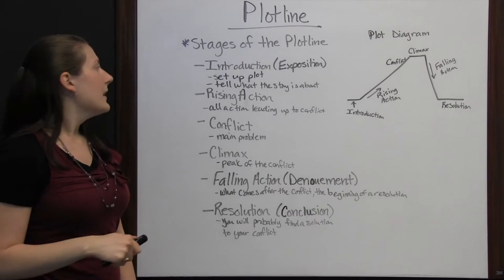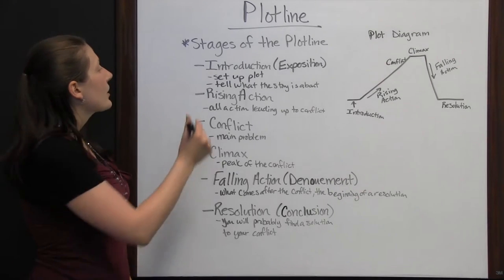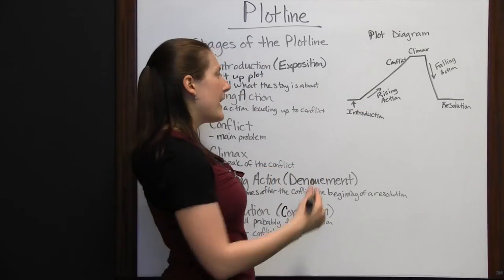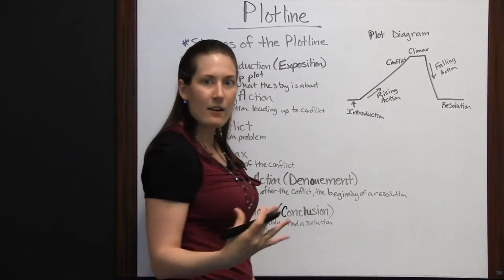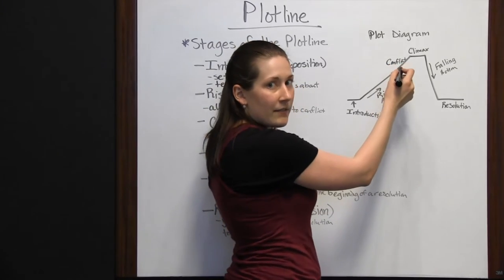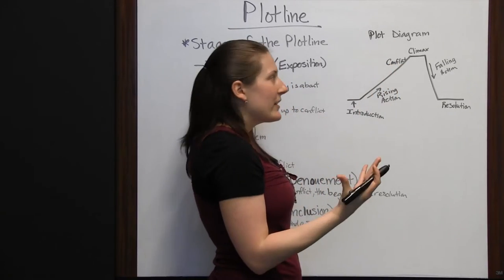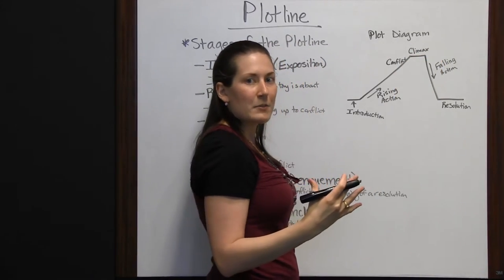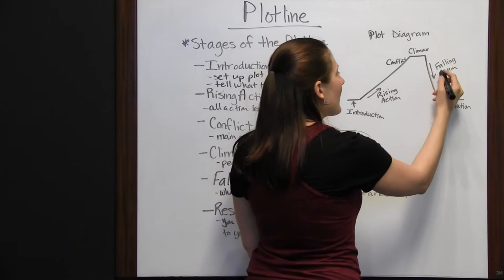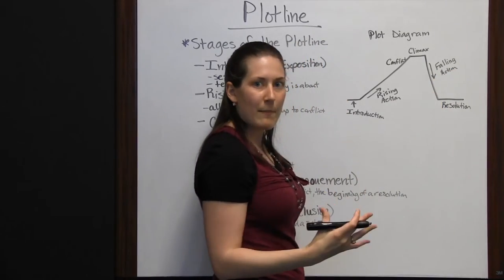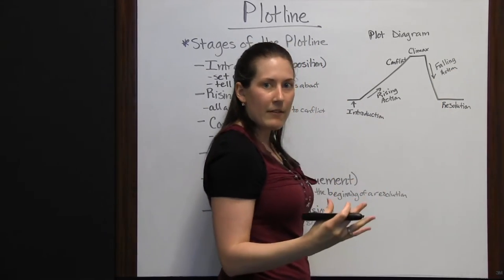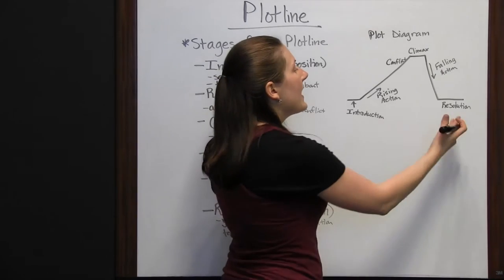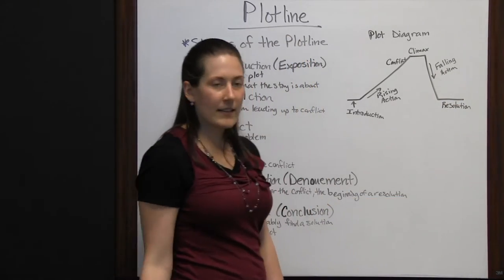Whenever you're going through a story, it's usually going to follow these main stages. You're going to start with the introduction, where all of your plot information is set up. You've got rising action with characters interacting and the plot building. Then you get to the conflict — a problem — and after that it's about how the characters are going to solve the problem. You get to the climax where everyone now knows about the problem and it's the very peak of the conflict. After that you've got your falling action, and in the resolution you find out what that solution is. Any loose ends are wrapped up finally in that resolution.